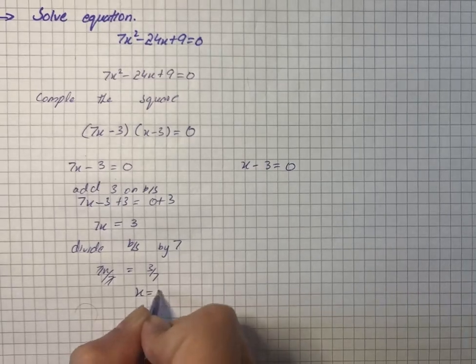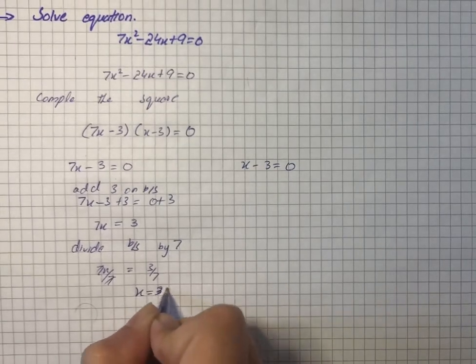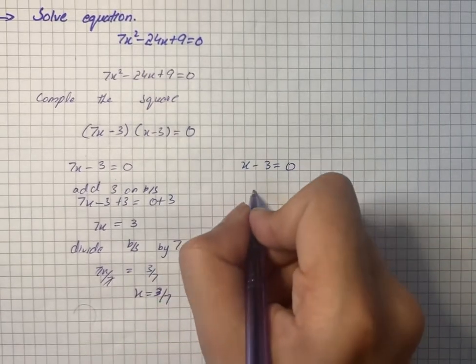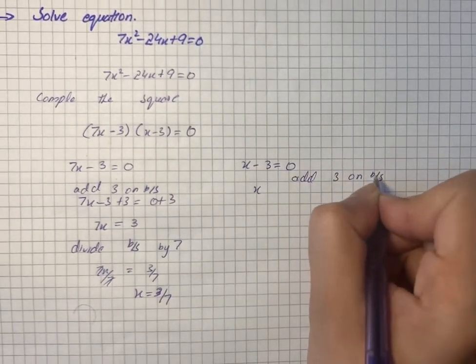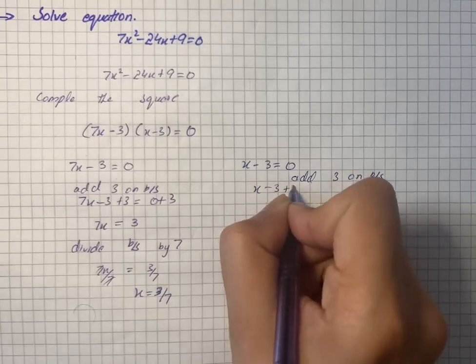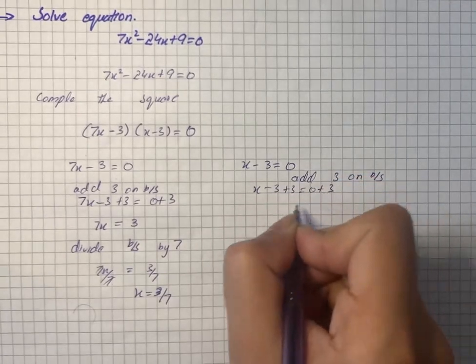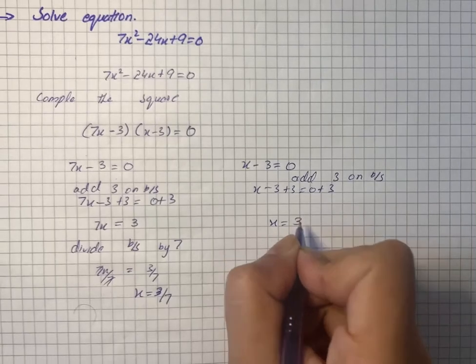= 3/7 for this case. For the other equation, we will do the same: add 3 on both sides. x - 3 + 3 = 0 + 3, so x = 3.